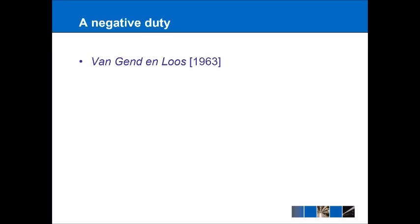Van Gend en Loos is one of the most famous cases in EU law. It was where the Dutch government attempted to put up a boundary between them and other countries — this was to do with pharmaceutical products — and the EU stepped in and said no: the whole point of Article 30 is that you don't put up customs charges or borders between these two countries. The Dutch government was found liable in that particular case.